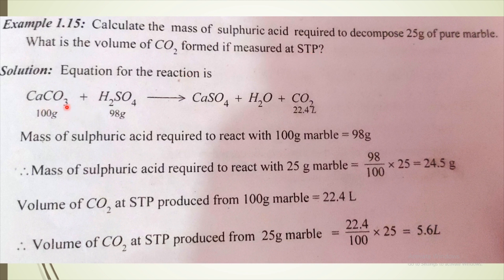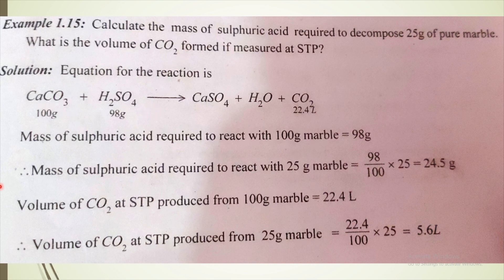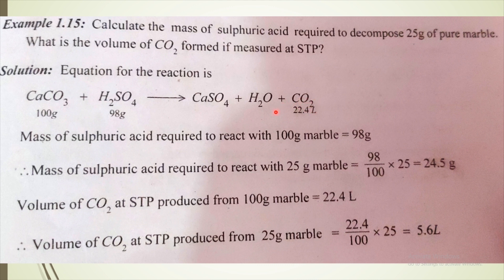The balanced equation is: CaCO3 plus H2SO4 gives CaSO4 plus H2O plus CO2. Calcium carbonate is 100 grams, sulfuric acid is 98 grams, and CO2 at STP occupies 22.4 liters. Calcium carbonate and sulfuric acid react to form calcium sulfate, water, and carbon dioxide.